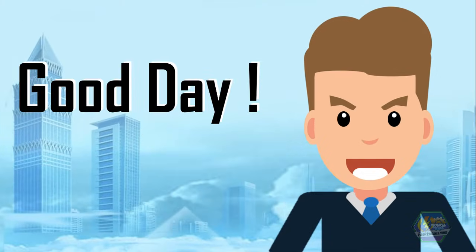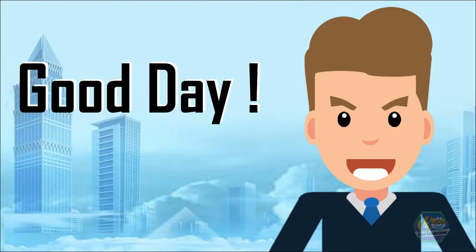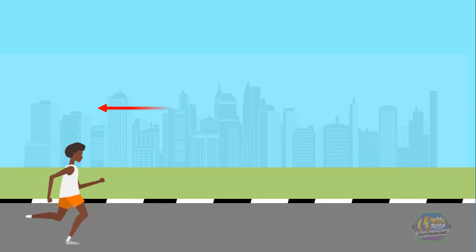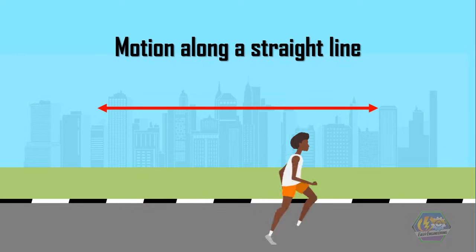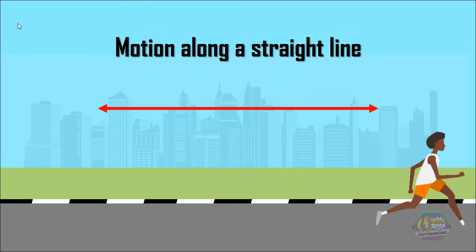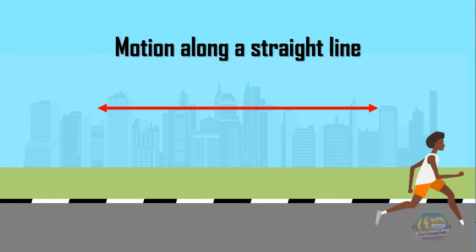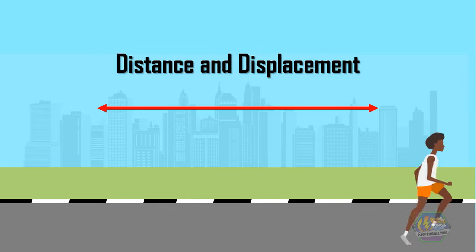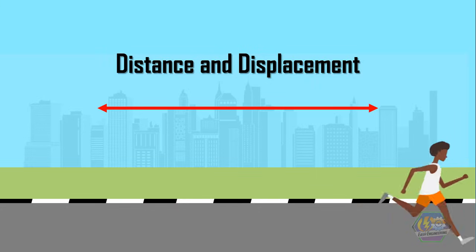Good day learners, this is EZ Engineering. This time we are going to talk about motion along a straight line, distance and displacement. The basic form of motion is the motion along a straight line. There are many parameters to consider in this kind of motion, but for this video we will only investigate the fundamentals, which are the distance and the displacement. Let us begin learning motion in a straight line by this common example.